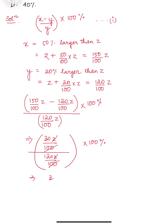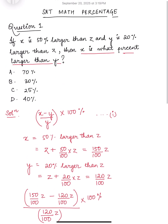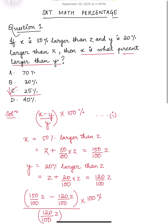That leaves us with 30 divided by 120, into 100%. Since 120 divided by 30 is 4, that gives us 25. Therefore, 25% is the correct answer — it is option C, that is 25%.